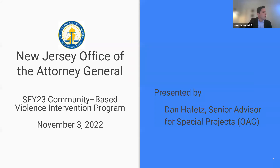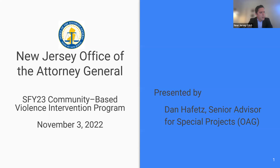Dan Heifetz from the Office of Attorney General. I'm going to take us through a slide deck for our webinar today. This webinar is intended to help applicants produce an application that accurately reflects the important work that they propose to do in this area. We decided to do this based on our grant process and award process for our fiscal year 22 community-based violence intervention program last year.